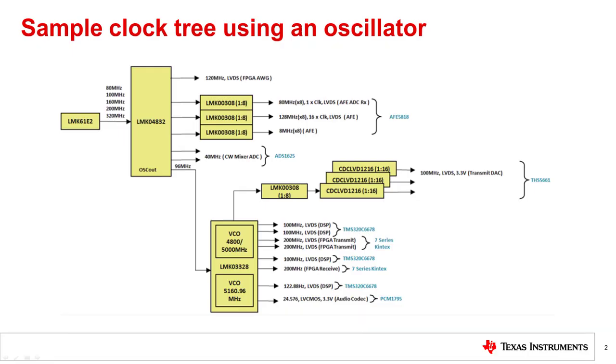This image is a sample clock tree for a 128-channel ultrasound cart-based system. The LMK61E2 oscillator is providing the reference signal for the entire system. Oscillators are used to provide the reference clock for clock generators and jitter cleaners, which then subsequently provide the clocking of AFEs, ADCs,